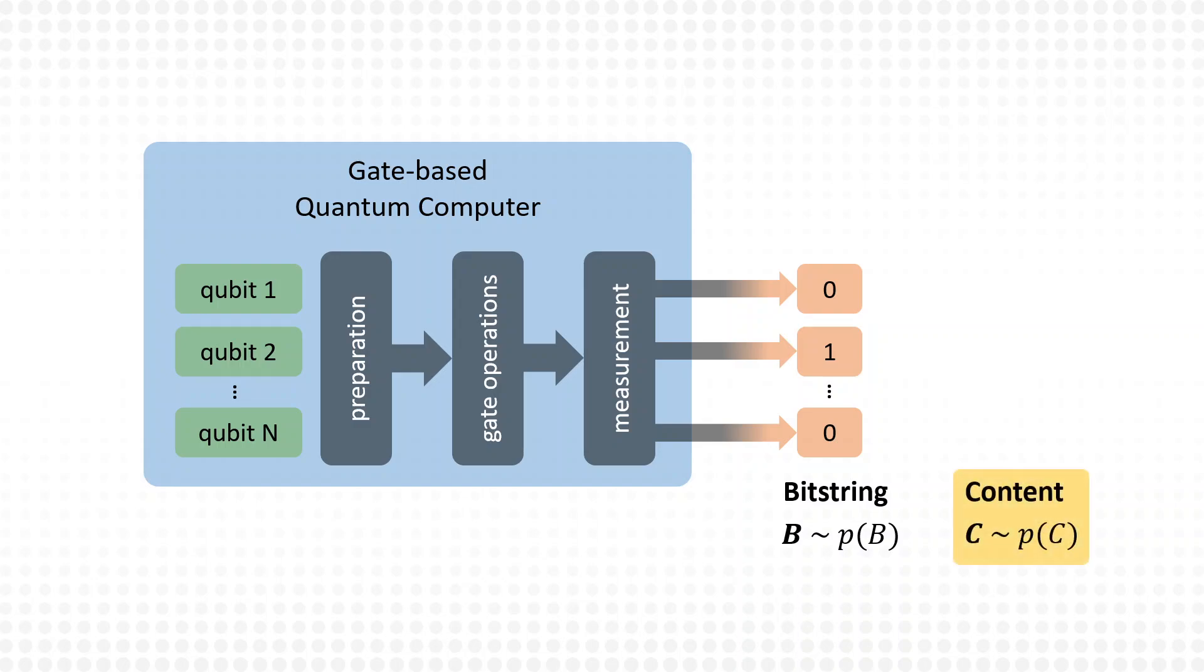It seems natural to investigate whether the random bit string distribution from a quantum computer can also be used to generate content in the sense of quantum procedural content generation. This is the motivation for this work, in which a specific implementation along the lines of the classical wave function collapse algorithm is considered.